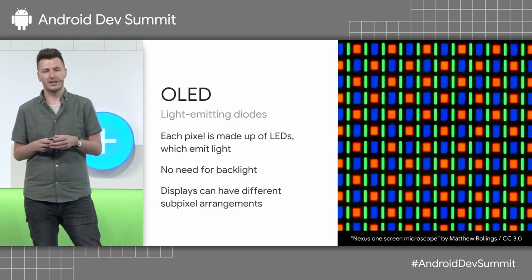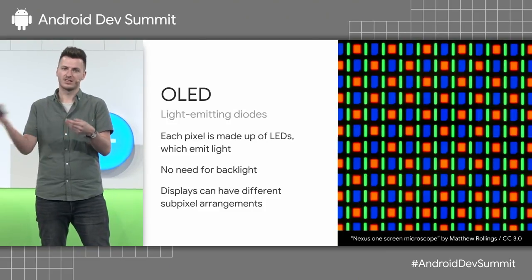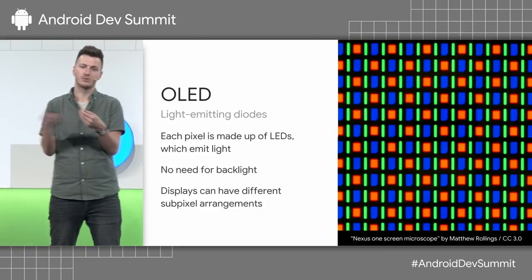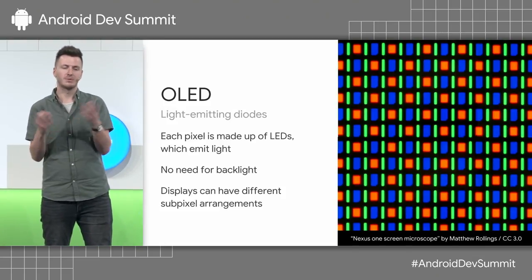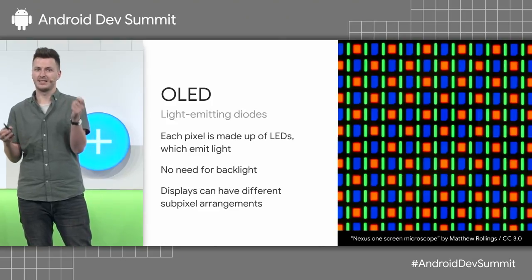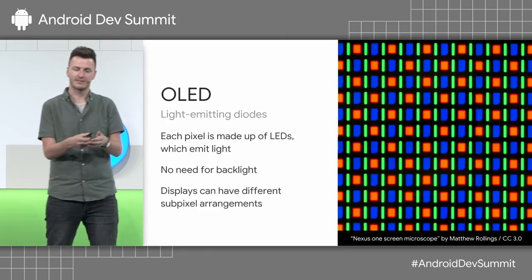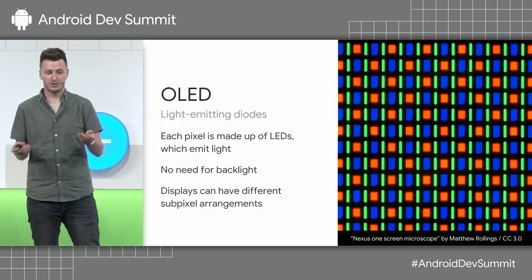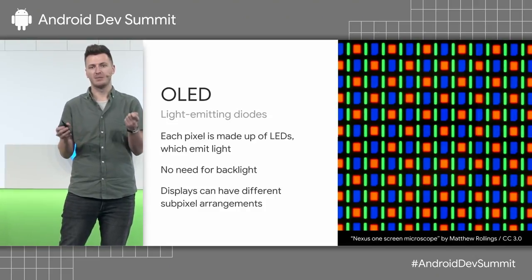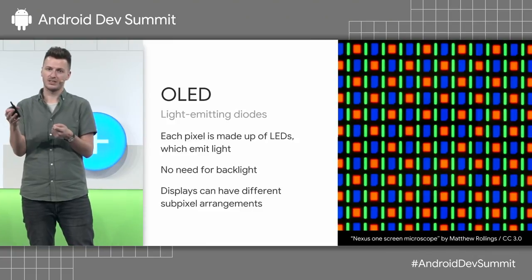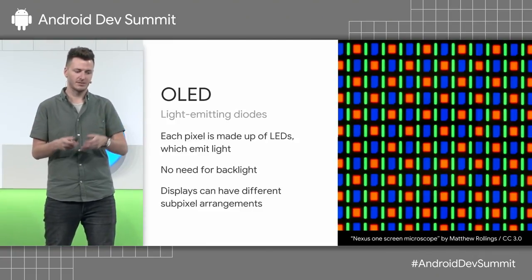With LCD, you achieve black by turning all the crystals on, but the backlight still shines through, so you can never really get a true dark black. OLED is completely different — the way LEDs work is they simply don't turn the pixel on, and that's how you get black. The power is dominated by actually emitting light, so it's the LED shining that is the power draw. There's no backlight — it's the actual LED itself.